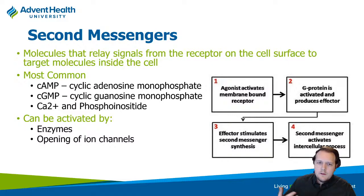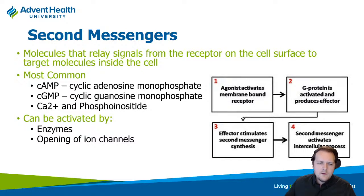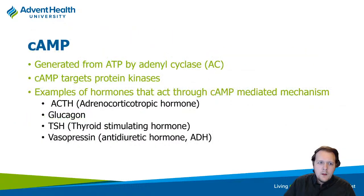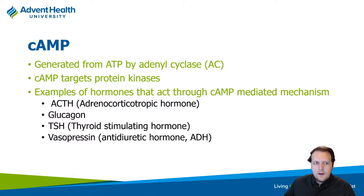Second messengers are anything secondary to the drug binding to the receptor — whatever happens after that. There's usually a signaling molecule that acts as the second messenger, the first messenger being the drug itself. Some of the more common ones include cyclic AMP (cyclic adenosine monophosphate), cyclic GMP, and calcium, which is a really important one. There's also a molecule that goes along with calcium called phosphoinositide.